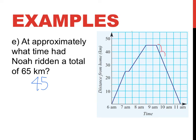He's done another 5 to get to here. 45, 50, 55, 60, 65 at about this point. And if you look on the map, that correlates exactly with about 10 a.m. So by what time had Noah ridden 65 kilometers? 10 a.m.